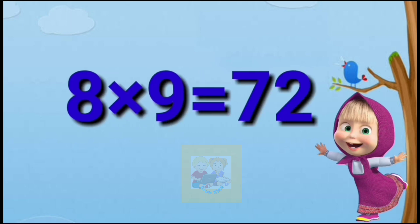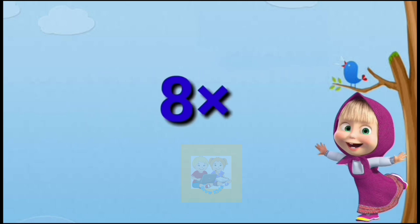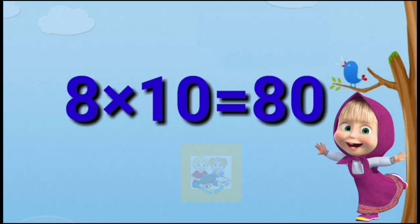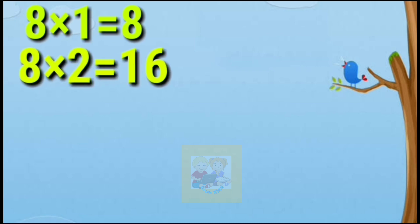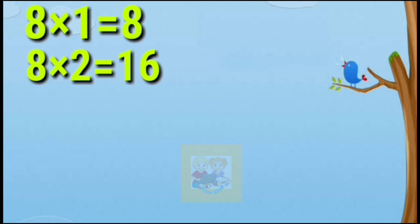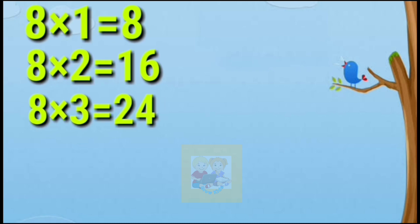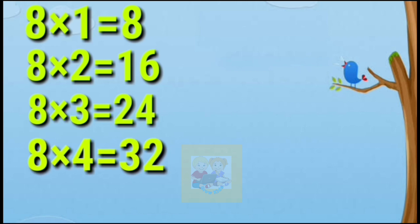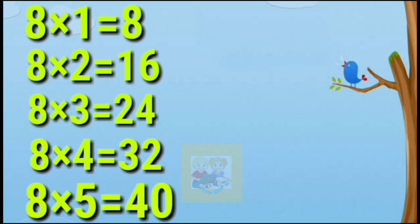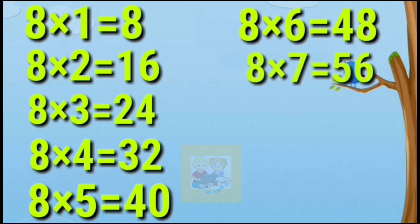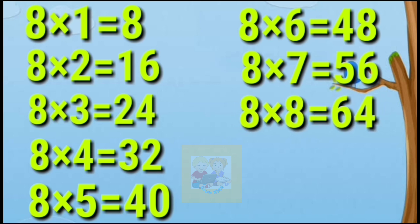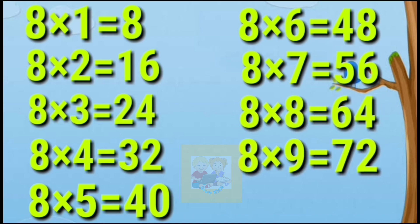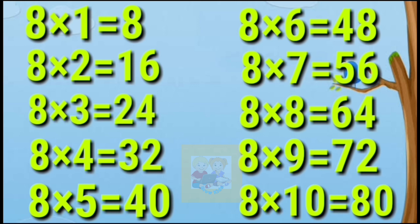Eight nines are seventy-two. Eight tens are eighty. Eight ones are eight. Eight twos are sixteen. Eight threes are twenty-four. Eight fours are thirty-two. Eight fives are forty. Eight sixes are forty-eight. Eight sevens are fifty-six. Eight eights are sixty-four. Eight nines are seventy-two. Eight tens are eighty.